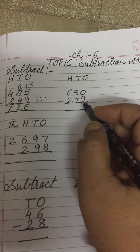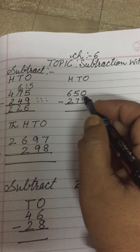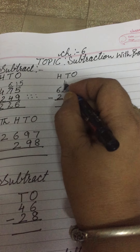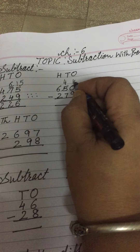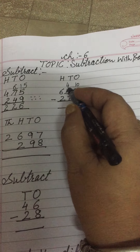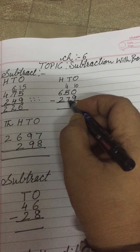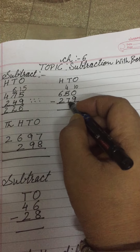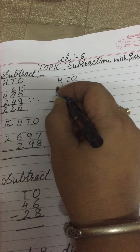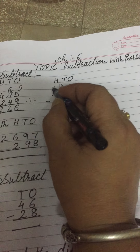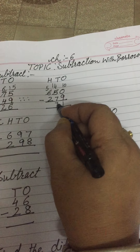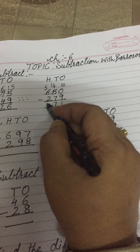Here again, 9 is bigger than 0. So we will make it 10 by taking 1 from the next place, leaving 4 there. Here it is 10. 10 minus 9 is 1. Now this lower digit is 7. Again, 7 is bigger than 4, so we will make it 14 by taking 1 from the next place, leaving 5 there. 14 minus 7 is 7. 5 minus 2 is 3.